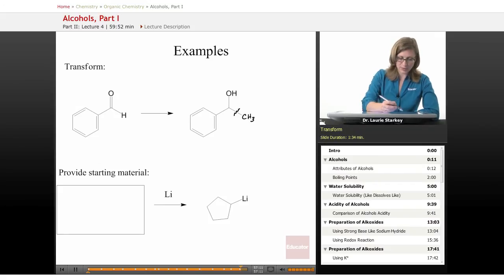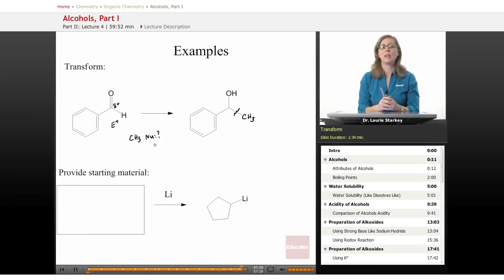If we wanted to react with this carbonyl carbon, we know that this is electrophilic. This is partially positive so it's electrophilic. So what we need to react with that carbon is we need a methyl that is a nucleophile. How can we make a methyl be nucleophilic?